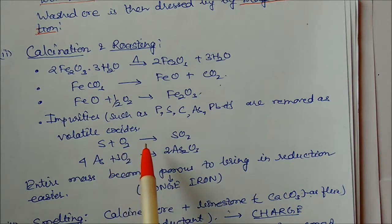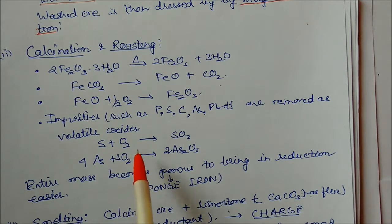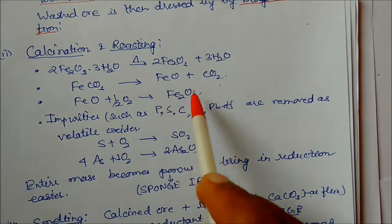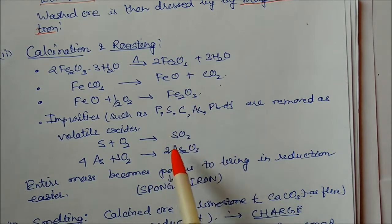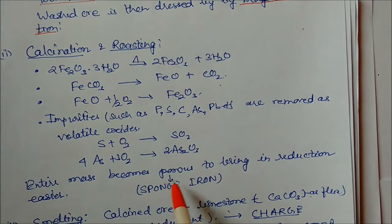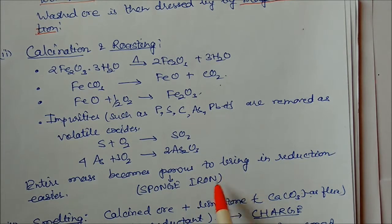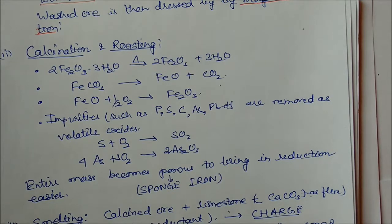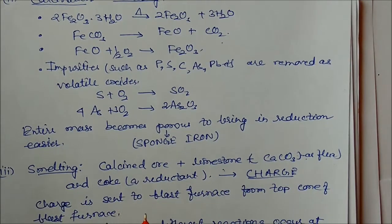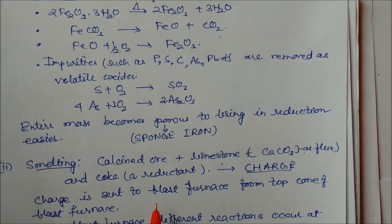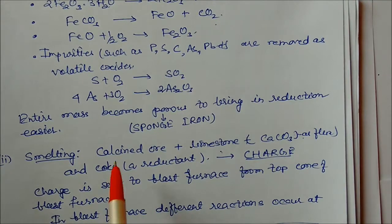For example, sulfur plus oxygen becomes SO2; arsenic plus oxygen becomes arsenic oxide. This entire mass — the iron ore — has these volatile compounds escaping, so the ore becomes like a sponge iron, which is very easy to undergo the reduction process and allow removal of oxygen from the iron.